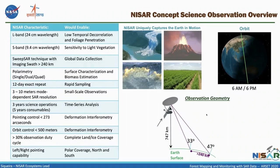The L-band part of NISAR will have full global coverage two times every 12 days. There is also an S-band wavelength — a higher frequency, shorter wavelength — that will be collected as well, but not globally; mostly over India, though there will be some places outside of India. So there will be an opportunity for doing two-frequency observations as well.